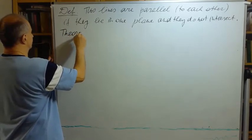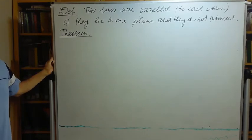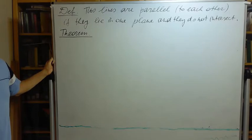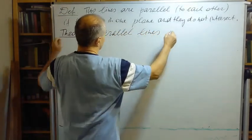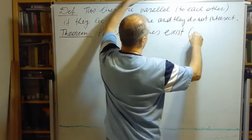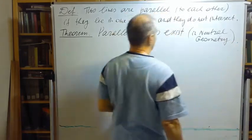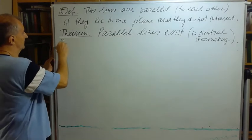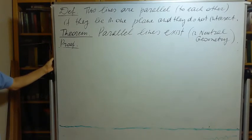Are there parallel lines at all? We know that two lines cannot intersect in more than one point — it follows from axiom one. But maybe all lines in one plane must intersect. Maybe there are no parallel lines. Parallel lines exist, and I will emphasize again, in neutral geometry. We don't need the parallel postulate. The proof will be a constructive proof — it will contain a part by contradiction, but it is constructive: we can construct this parallel line.